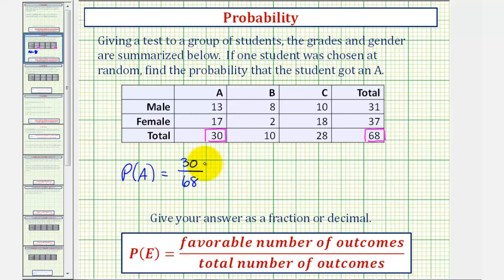Notice 30 and 68 do share a common factor of 2. And therefore as a fraction, the probability of an A would be 15 thirty-fourths. This fraction is in simplified form.